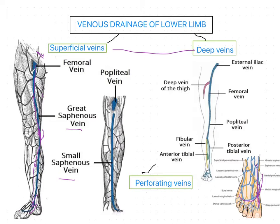Regarding the tributaries of the great saphenous vein, it has a medial marginal vein which drains from the medial side of the sole of the foot. It also has a communicating vein which connects the great saphenous vein and the small saphenous vein.